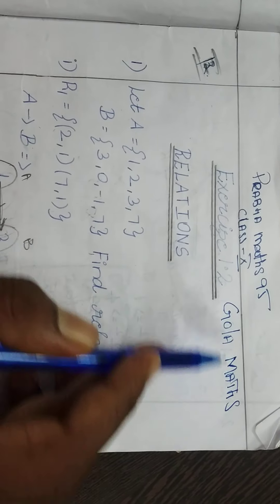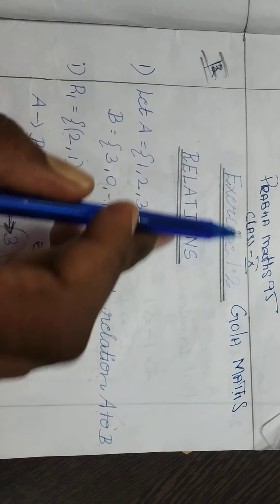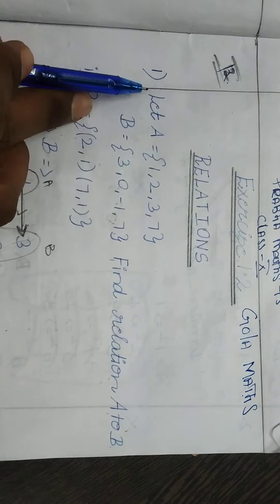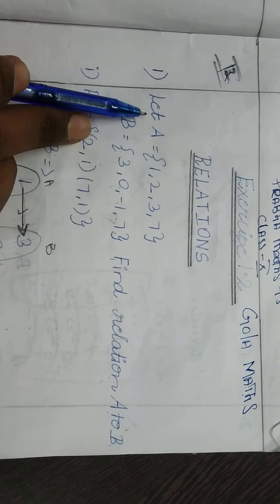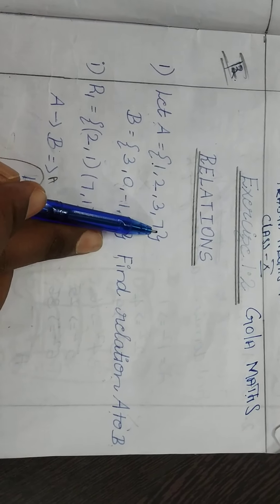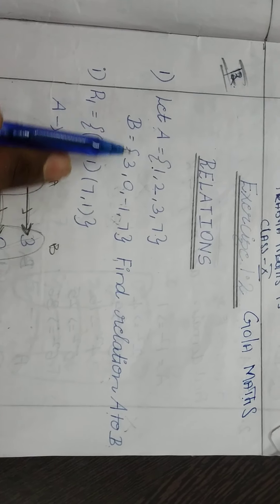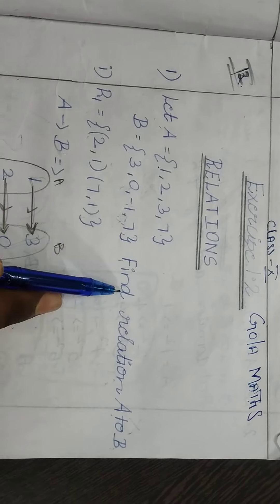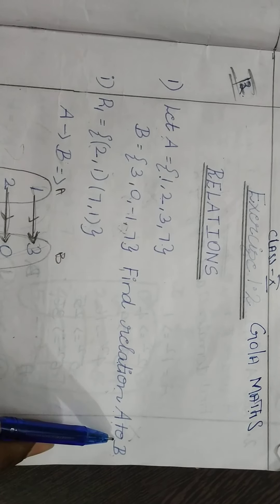First lesson. Let A = {1, 2, 3, 7} and B = {3, 0, -1, 7}. Find the relation A to B.